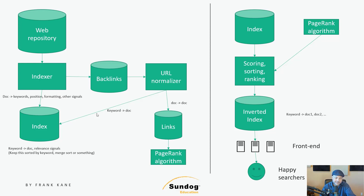You were right to focus on the high-level architecture first, because that's the hard part. In the minute or so that we have left, talk more about how you'd scale all of this to billions of pages and users. Well, I talked a little bit about using distributed storage and analytics. Originally at Google that would have been Bigtable and MapReduce. Today, the web repository might be a data lake built on cloud storage.